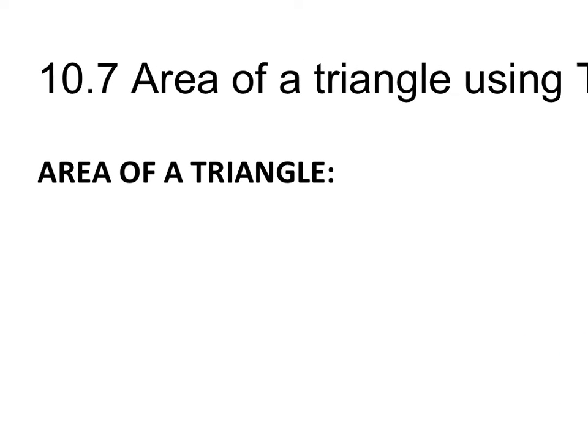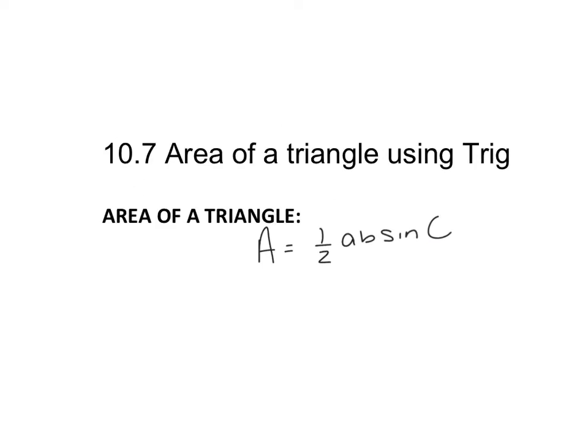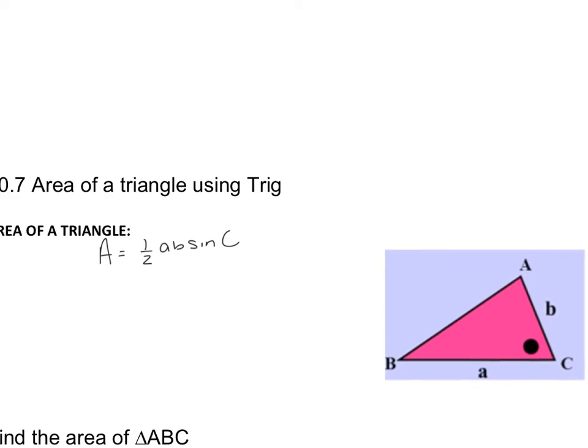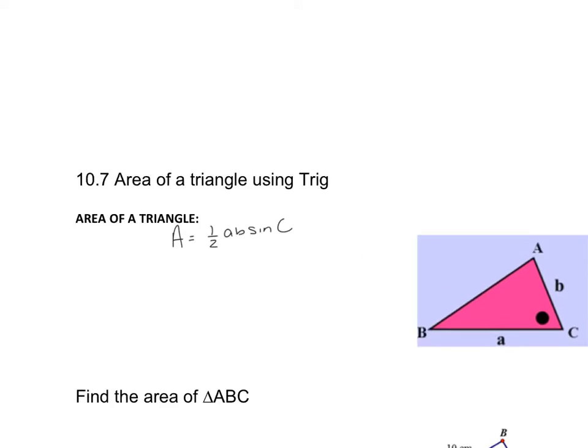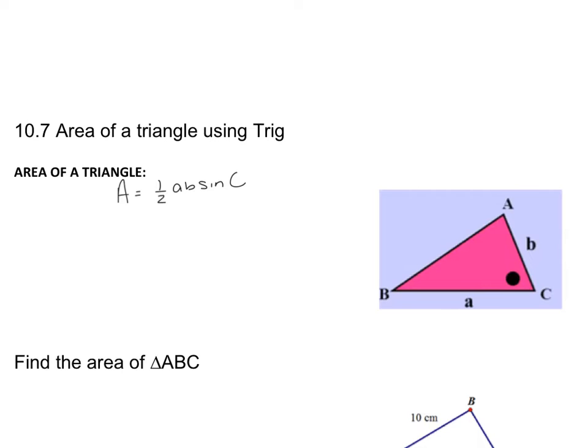So this is a formula you have to memorize. The area of a triangle formula is area equals one-half AB sine C. And what that's saying is that area is equal to one-half two side lengths and then the sine of the angle. So this only works when you have a side, an angle, and a side.